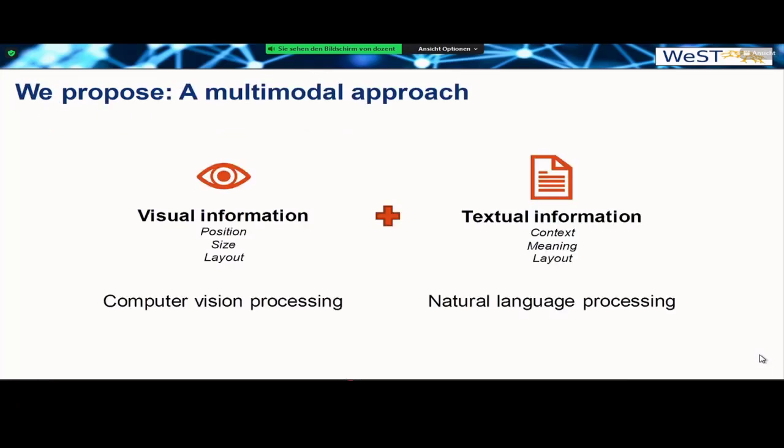For our proposed approach, we went with the suggestion of the authors and we included textual information as a modality for this approach, such that we are using two multi-modalities here. The first one is visual information, where we take the attributes and features, for example, the position and the size of the elements, the area or occupation area that elements taken, as well as the textual information such as the context, the meaning of the text and the elements.